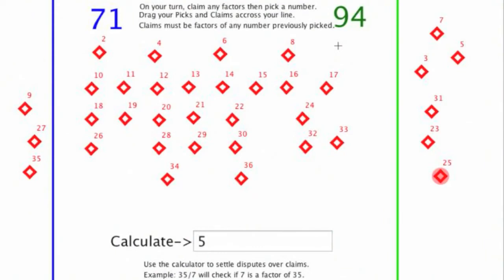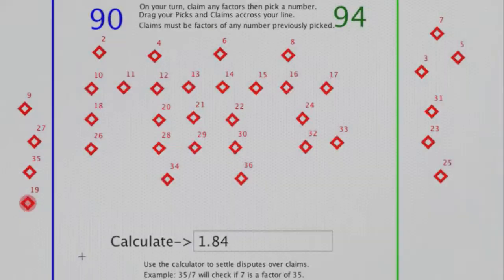If there's a dispute, for example, if I said that 19 went into 35 and tried to claim 19, the other person could challenge that. If they challenge that, this is the only time you're allowed to use the calculator. You would go down to the calculator and take 35 divided by 19 and see if it's a whole number. It's not a whole number. Therefore, the blue team can steal that 19 because it was an illegal claim.